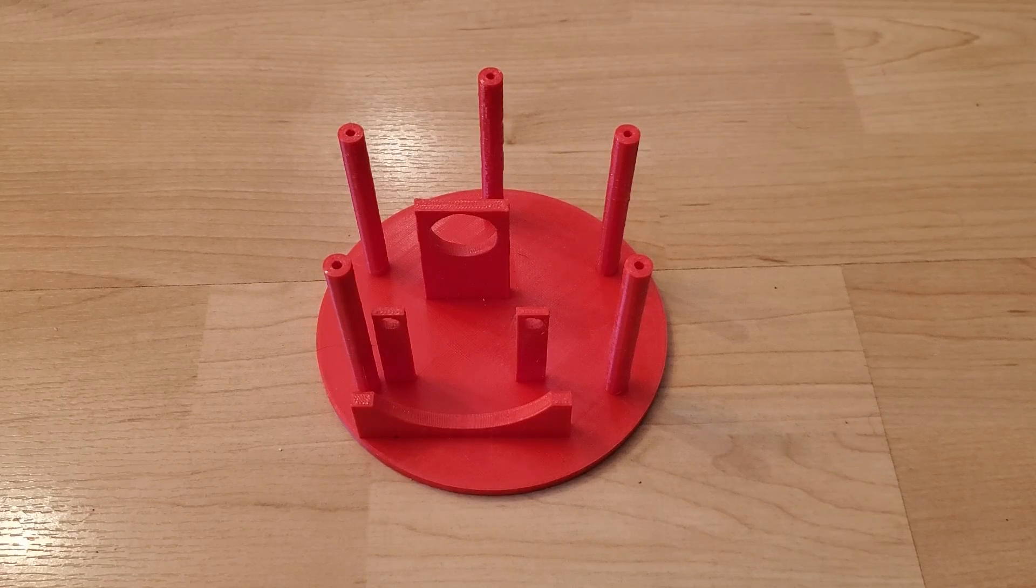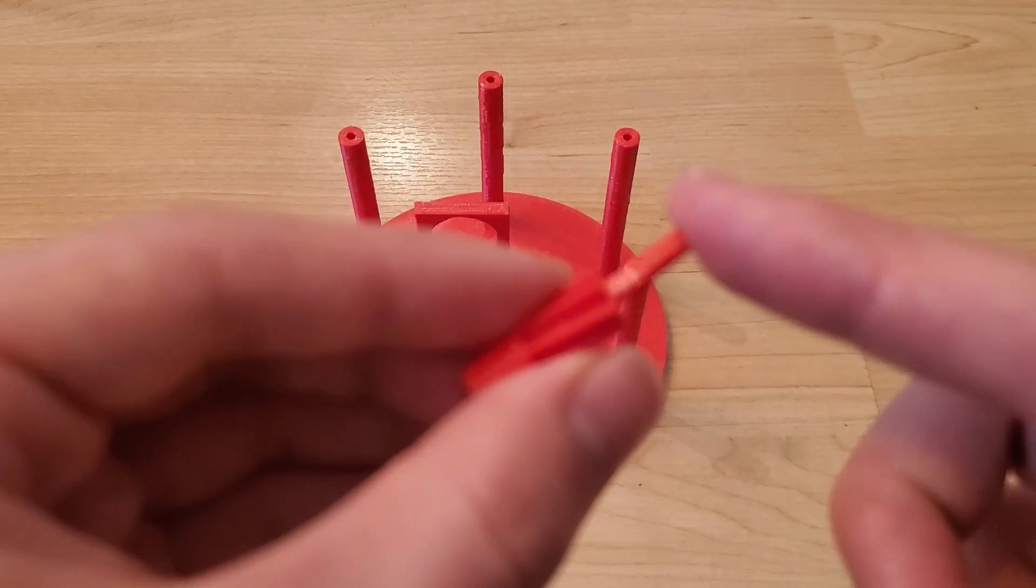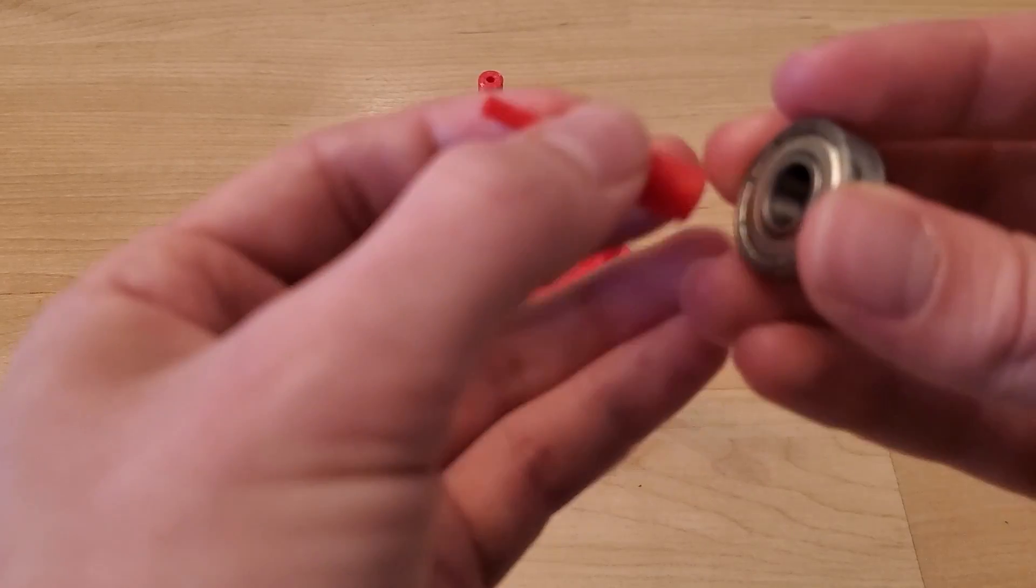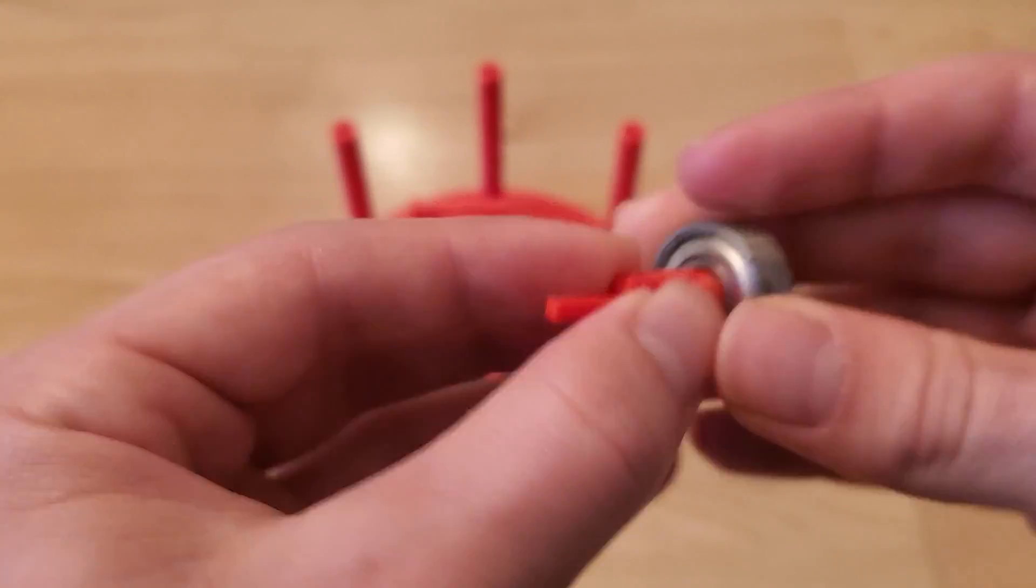The assembly of the centrifuge is also quite simple. First the square drive and gear are hammered together. Once you've completed that you can attach it into the bearing.